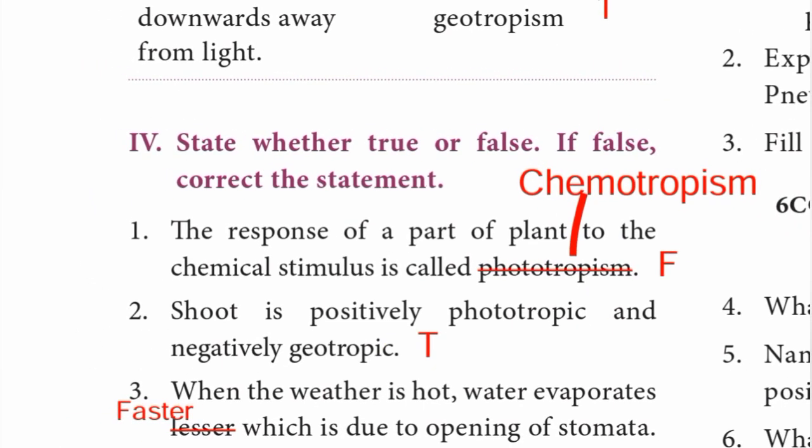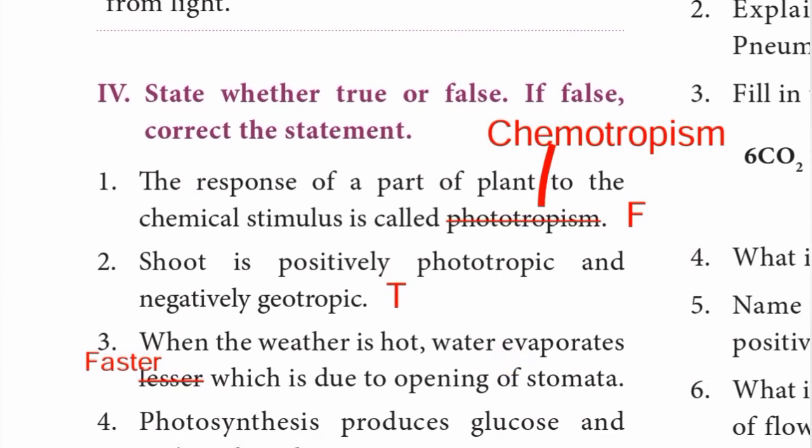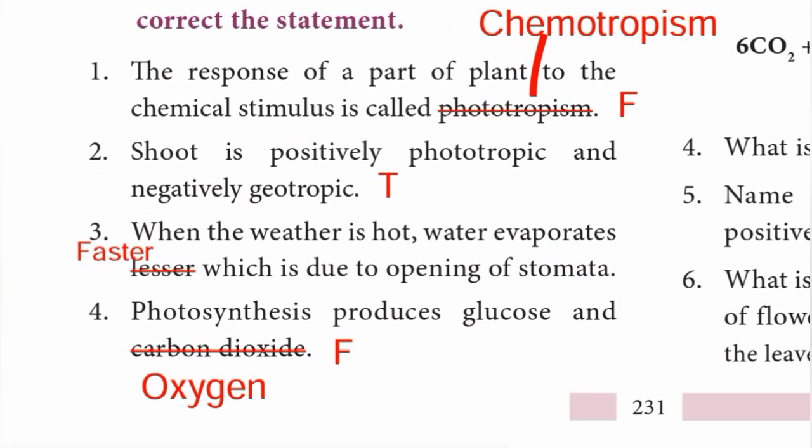Roman number four - state whether true or false; if false, correct the statement. First one: the response of a part of a plant to chemical stimulus is called chemotropism. Second: shoot is positively phototrophic and negatively geotropic. The statement is true.